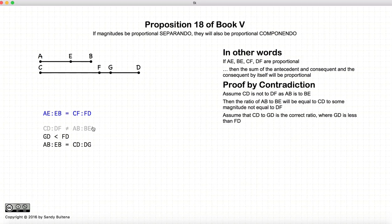So somewhere along the line, we must have a ratio that is equal, and we are going to find the point G such that AB to EB is going to be equal to CD to DG.